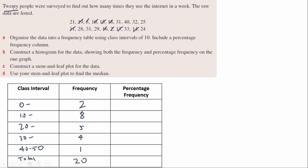Now let's find the percentage frequency. The first group: 2 over 20 times 100. The second: 8 over 20 times 100. The third: 5 over 20 times 100, and so on. Working these out gives 10%, 40%, 25%, 20%, and 5%. At the bottom, add all percentages together — you should get very close to 100. A result like 99.9% or 100.1% is fine; it's just due to rounding.